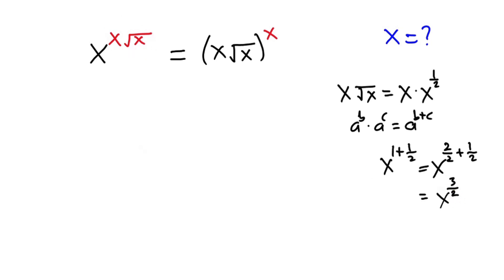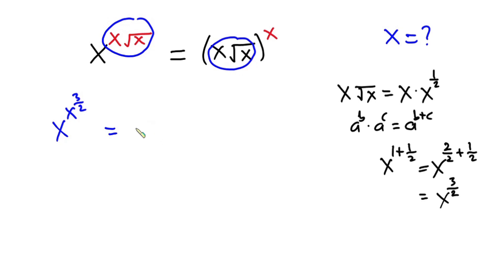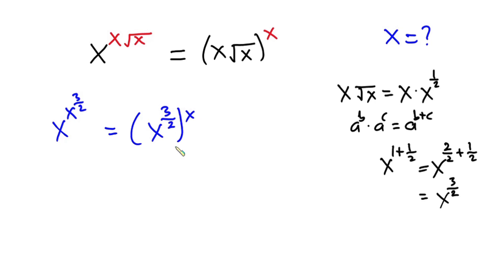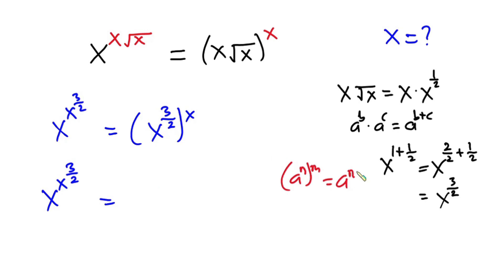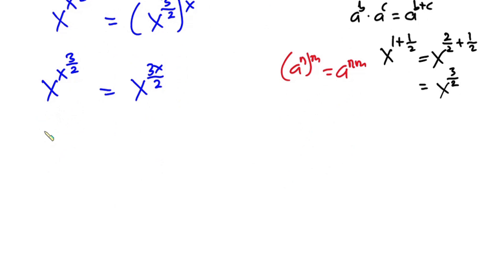So in place of x times the square root of x, I'm going to put x to the power three over two. So we have x to the power of x to the power three over two, is equal to x to the power three over two, all to the power x. From indices, if I have a to the power n, to the power m, this is the same as a to the power n times m. So the right-hand side becomes x to the power three x over two.